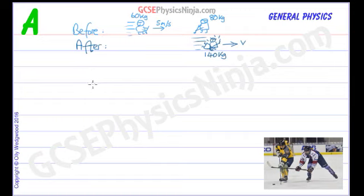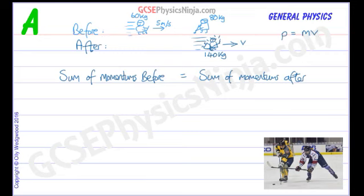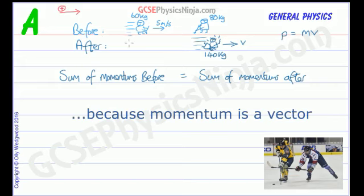Now we're all set up to do the conservation of momentum calculation. The sum of momentums before must equal the sum of momentums after the collision. Momentum is given the symbol P and it is mass times velocity. In any momentum calculation, it's really important to define a direction as positive. Let's call going to the right as positive — any movement to the left would be a negative velocity.